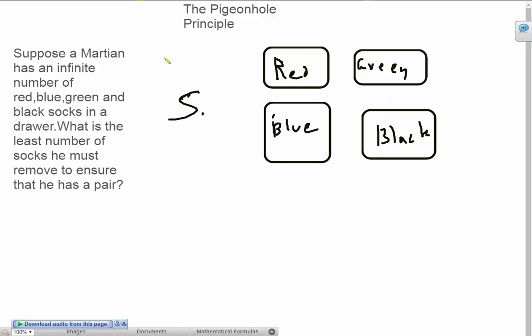If I have five, then I can easily put four of these pigeons inside each of these pigeonholes, but the last one will also have to go in either the red, or the blue, or the green, or the black one, and therefore the Martian will have himself a pair.